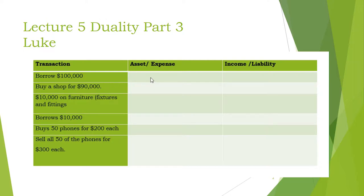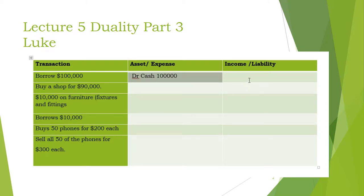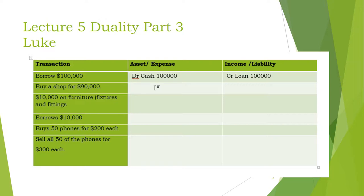He has borrowed a hundred thousand. Let's assume it's from the bank. So that will be a debit because his cash will go up a hundred thousand. Cash is an asset — debits are your assets, losses and expenses. To make an asset go up, you debit it. The corresponding credit will be to a loan account. So transaction number one: debit cash, credit the loan. Transaction number two: he purchases a shop, which is an asset, so we will debit the shop and credit cash 90,000.